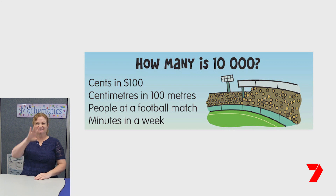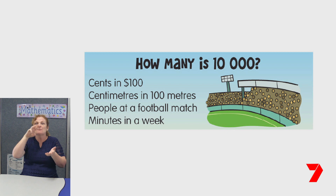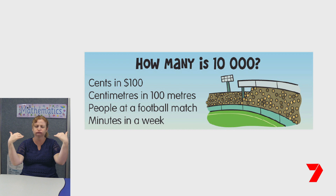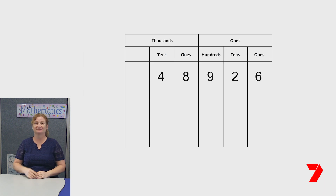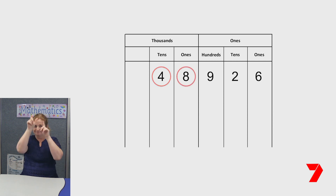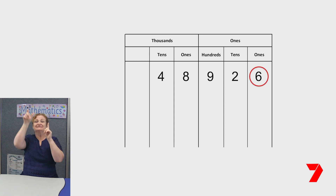Now just how many is ten thousand? Well, ten thousand is how many cents there are in a hundred dollars. Ten thousand is about how many minutes there are in a week. And ten thousand is how many people would normally go to a sporting event at a large arena. I have placed a five digit number on the place value chart. There is a digit in the ten thousands, thousands, hundreds, tens and ones place value positions.